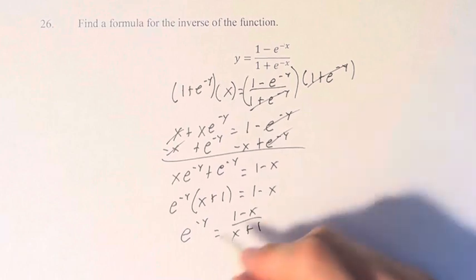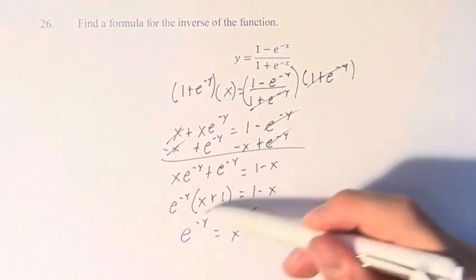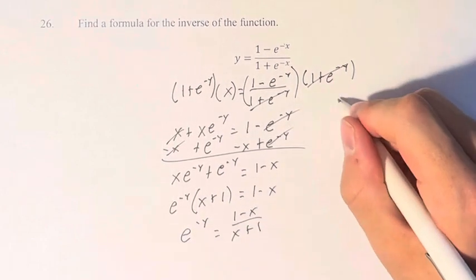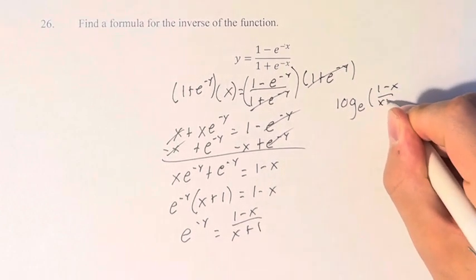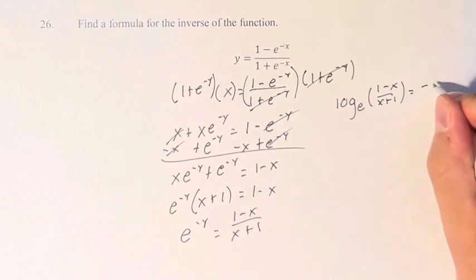Moving up here, we can take the log of this. So log base e of the other side, 1 minus x over x plus 1, is equal to the exponent, negative y.